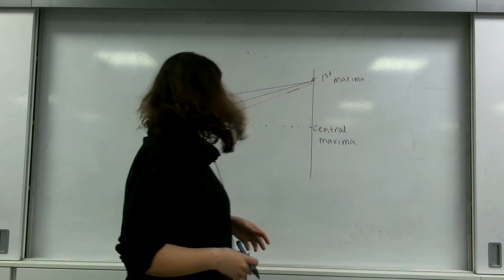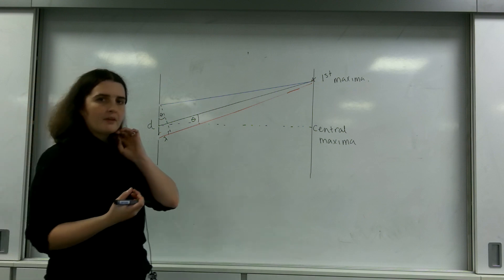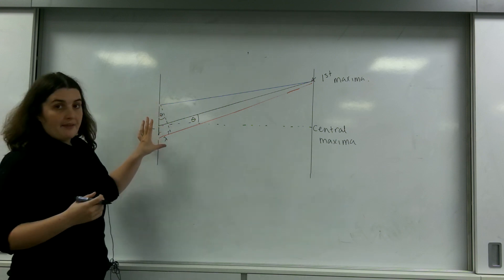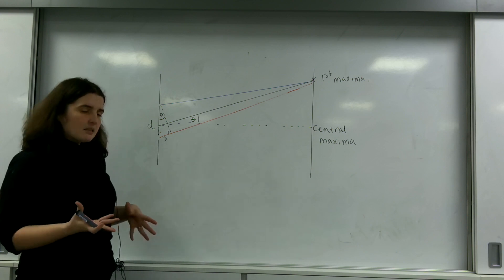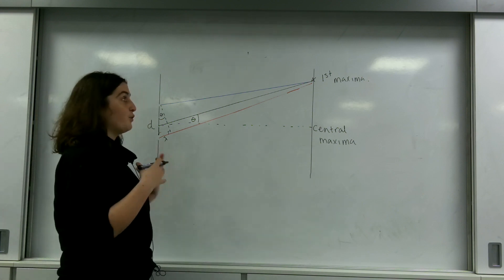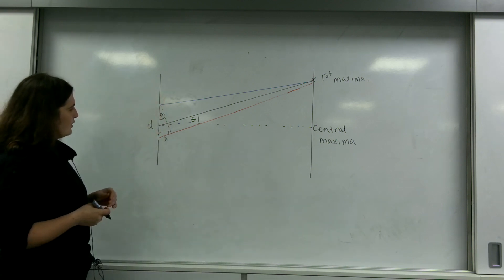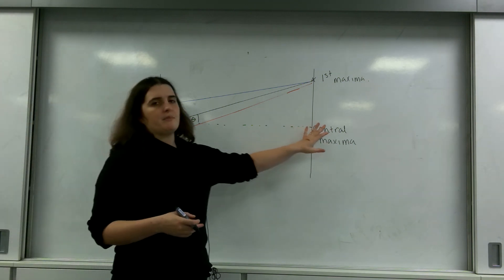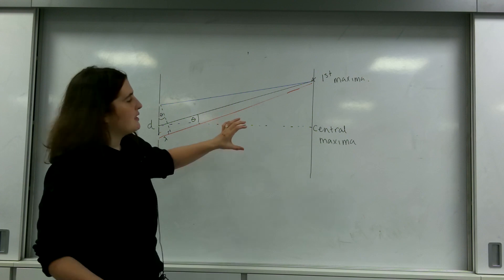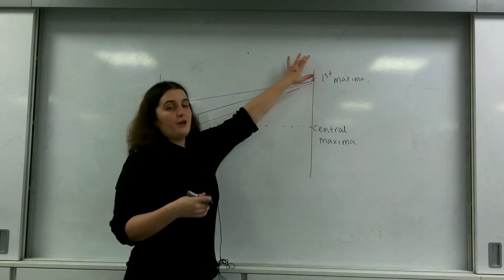I've got a diagram of a zoomed-in part of the diffraction grating with two very small slits. The letter D is the slit separation between one slit and another. In Young's double slit this value was S — it's important to remember you can only use each formula for its respective setup. The central maxima is the bright bit where light from both gaps travels the same distance and arrives perfectly in phase. I'm interested in the first maxima.